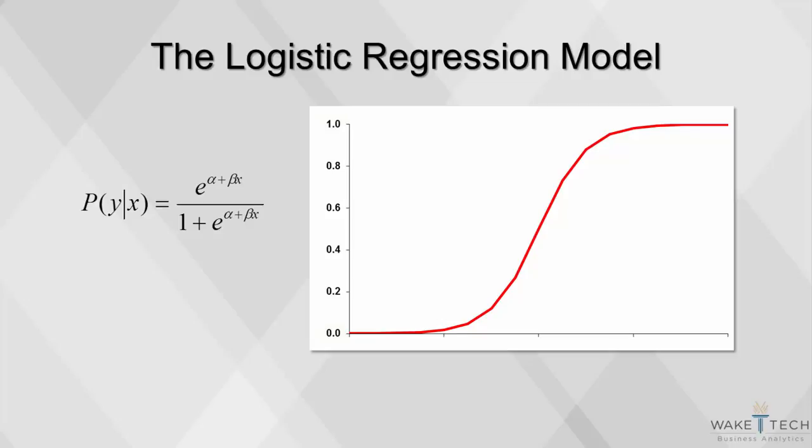The logistic function is a nonlinear function of independent variables. However, we can convert this nonlinear function into a linear relationship using the log of the odds ratio. Note that instead of modeling just zeros and ones, we're modeling the probability of an event occurring.